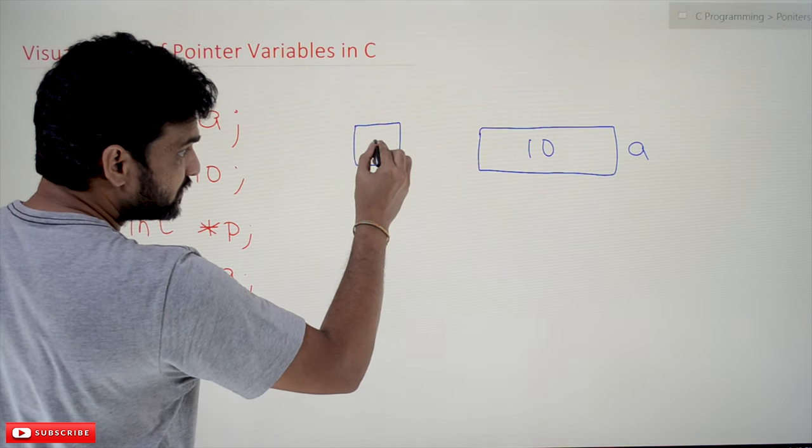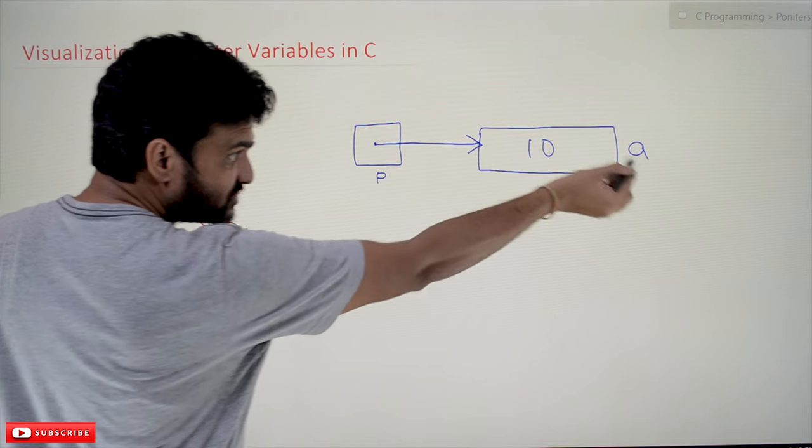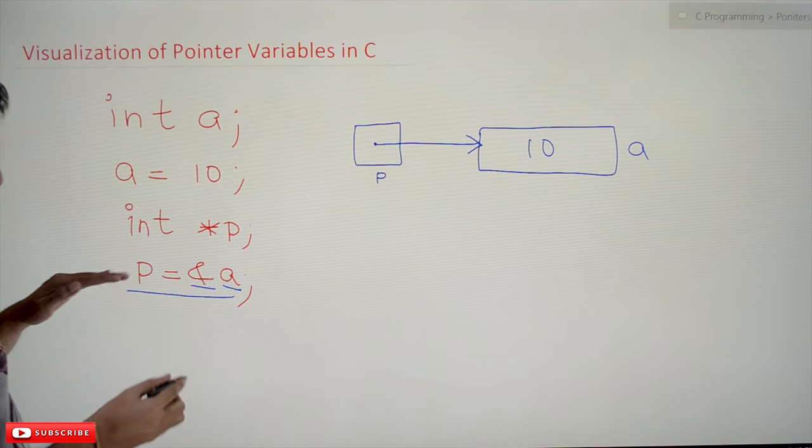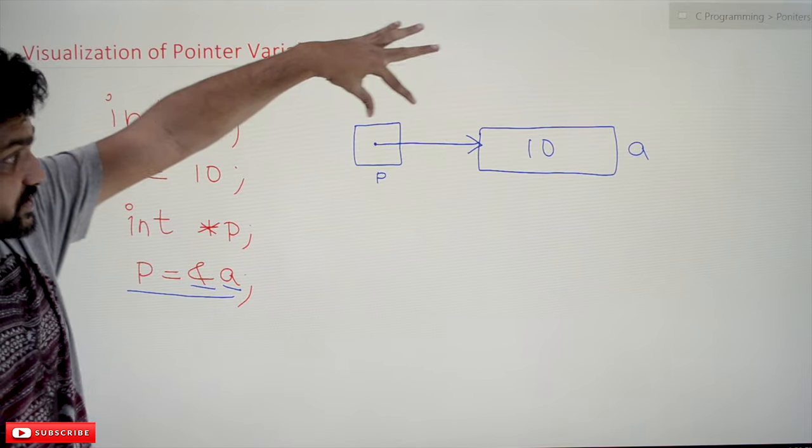Address of a means p is pointing towards a. So this is what we call as a pointer variable.